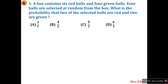December 2007, Question 1: A box contains six red balls and four green balls — total 10 balls. Four balls are selected at random from the box. What is the probability that two of the selected balls are red and two are green?